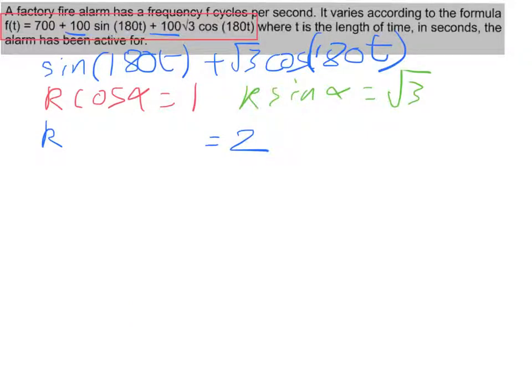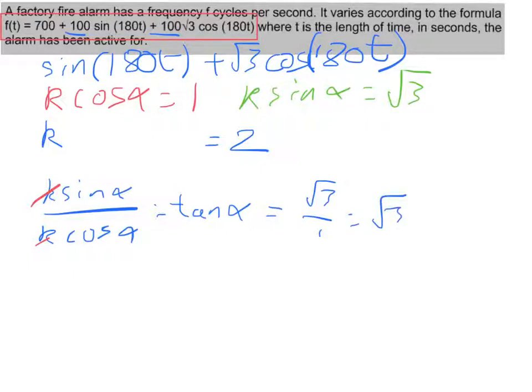Right, now to find alpha. I know if I take k sine alpha divided by k cos alpha, well for a start those k's will cancel out, and sine divided by cosine will always give me tan alpha. So I know tan alpha is equal to, well, k sine alpha is root 3 over cosine alpha, and we know that is 1. Root 3 over 1, root 3. Inverse tan of root 3, exact values again. Should know that that is 60, 60 degrees.